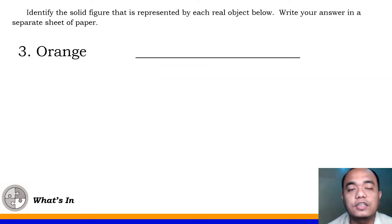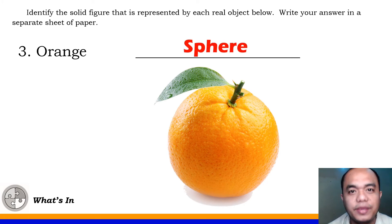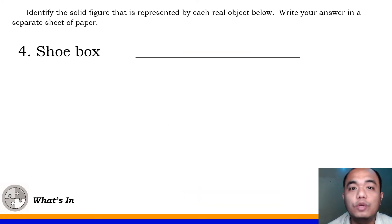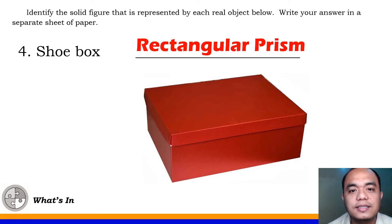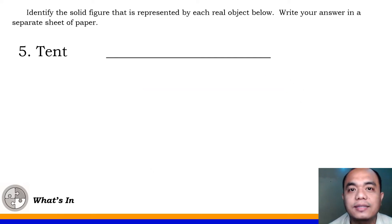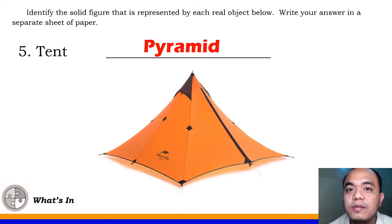Number 3, orange — the orange fruit. What solid figure is that? That's a sphere. Number 4, shoe box — this is a shoe box. So what figure is this? That's a rectangular prism. Number 5, tent — that's a pyramid.